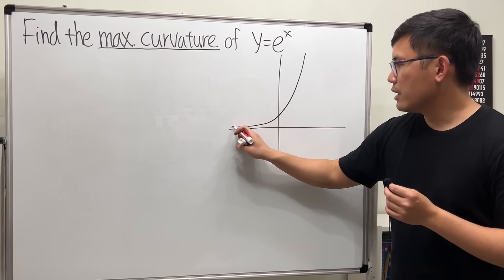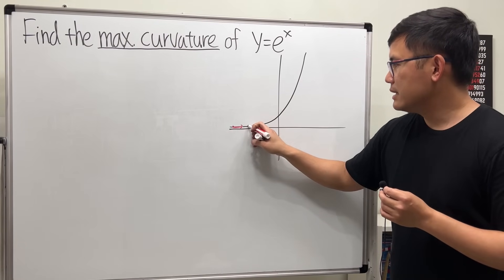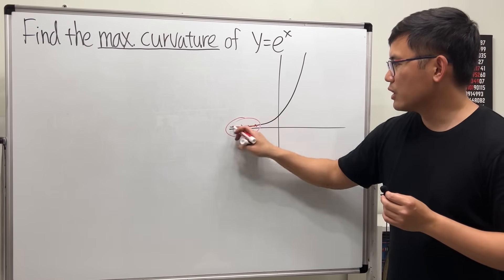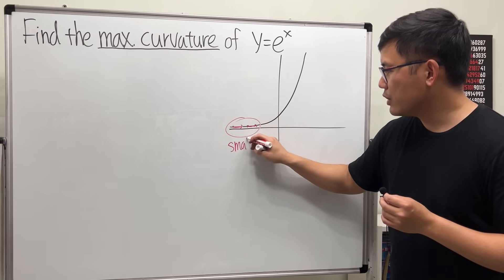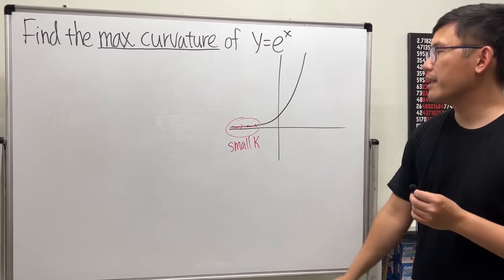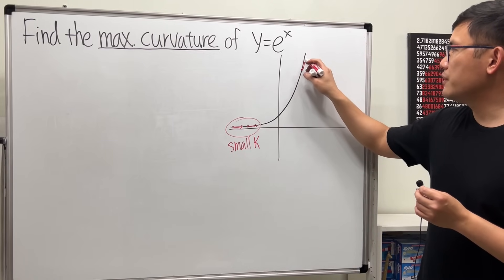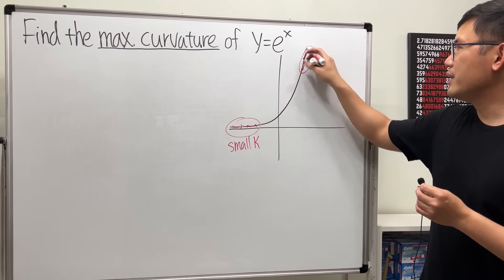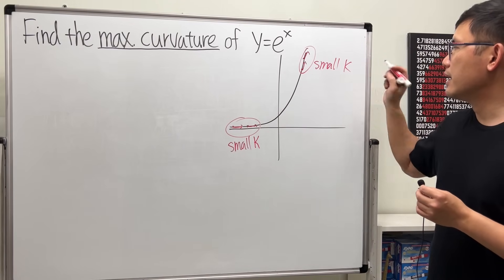If I want to talk about the curvature, you can see that the curve right here is not really bending. So right here, we are going to expect to have small curvature kappa. And right here as well, the curve is not really bending either. You can also expect that you have small kappa.